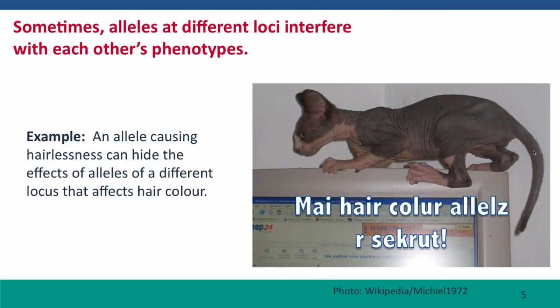That's a case where genes act independently. But in many cases, alleles at different loci interfere with each other's effect on phenotype. Here's an extreme example: an allele that caused baldness in men may make it difficult to tell what color of hair that person would otherwise produce. Their hair color alleles are unknowable if a separate mutation causes there to be no hair.